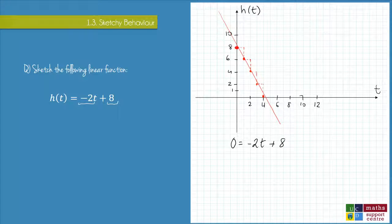And we rearrange to solve for t. 2t = 8, which means t = 8/2, which is 4.